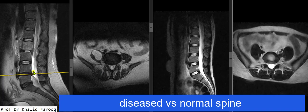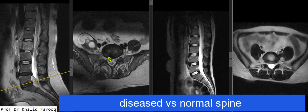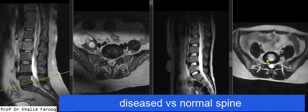Here we can see there is a small broad-based disc bulge at L4/5, which can be confirmed on axial images. There is also a tiny right paracentral disc bulge at L5/S1. Additionally, a radial tear is noted in the right posterolateral fibers of the annulus fibrosis, which leads to chemical neuritis of adjacent nerves and can cause significant pain. In the normal case, there is no such radial tear.